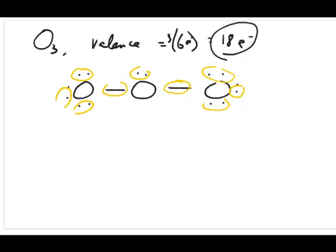Now it's clear from looking at this that the middle oxygen doesn't satisfy the octet rule, so I can fix this structure by creating double bonds. What I would do here is take one of these lone pairs and move it here to make a double bond. So that would be one structure, which is shown right here.